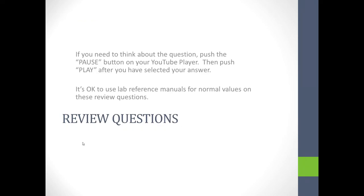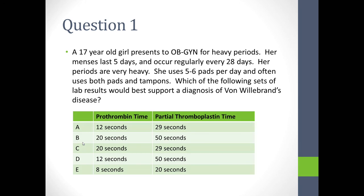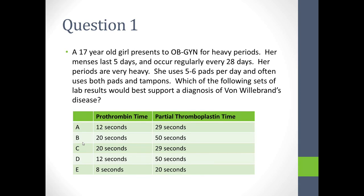We'll talk about the treatment of von Willebrand's in later videos. Now, some review questions. Pause your video player to think about your answer, then push play after you've selected it. Use lab reference manuals for normal lab values if needed. Question one: a 17-year-old girl presents to OB-GYN for heavy periods. Her menses last five days, occur regularly every 28 days, and are very heavy — she uses five to six pads per day and often has to use both pads and tampons. Which of the following sets of labs would best support a diagnosis of von Willebrand's disease?